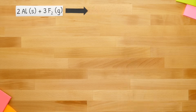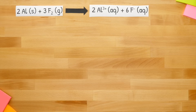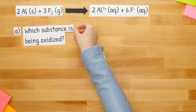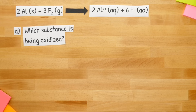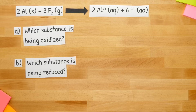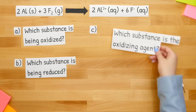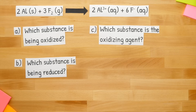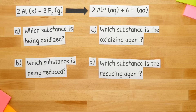In this question we're given a balanced chemical equation and we're asked to find which substance is being oxidized, which substance is being reduced, which substance is the oxidizing agent, and which substance is the reducing agent.